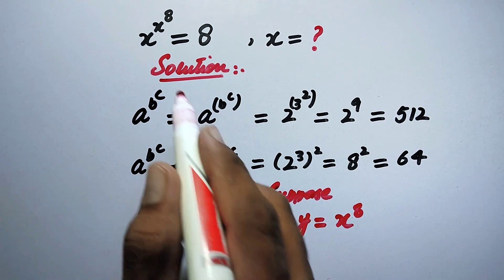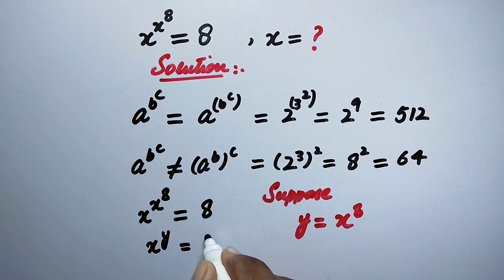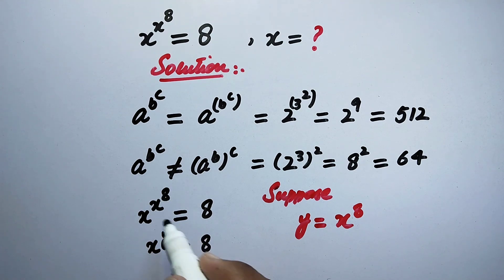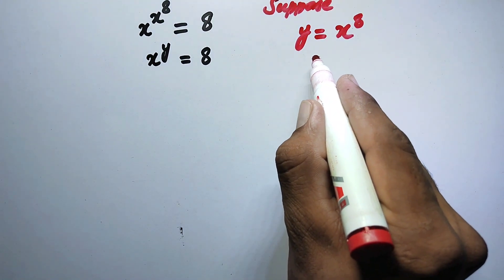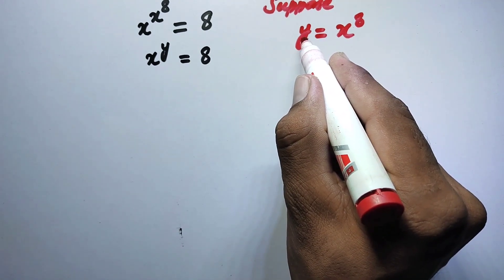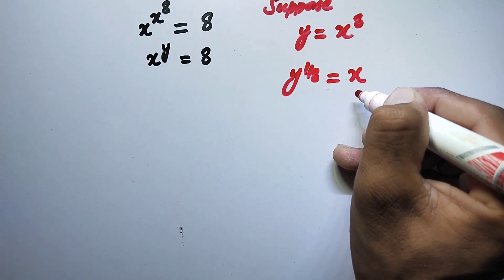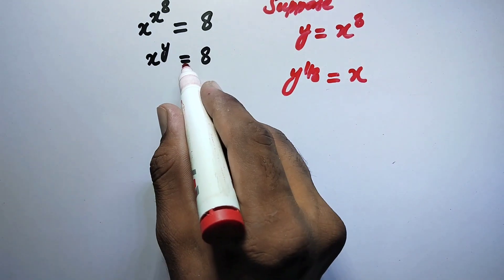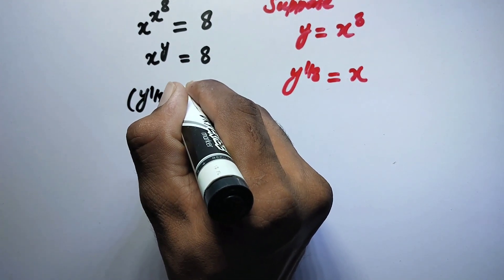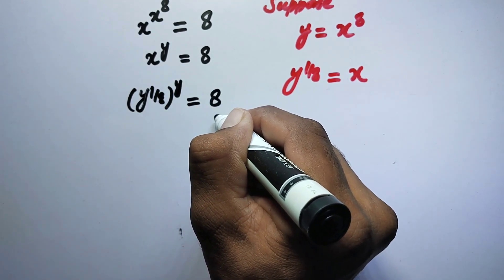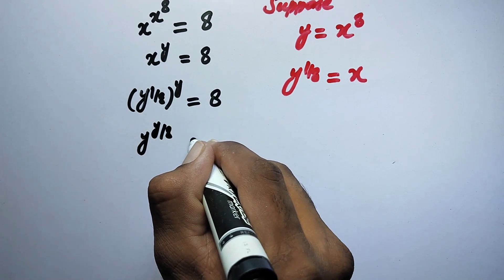By substitution, we replace x to the power of 8 with y, giving us x to the power of y equals 8. We then raise both sides to the power of 1 over 8, so x equals y to the power of 1 over 8. Substituting this back, we get y to the power of (1/8) all raised to the power of y equals 8. Since the powers multiply, this becomes y to the power of y over 8 equals 8.